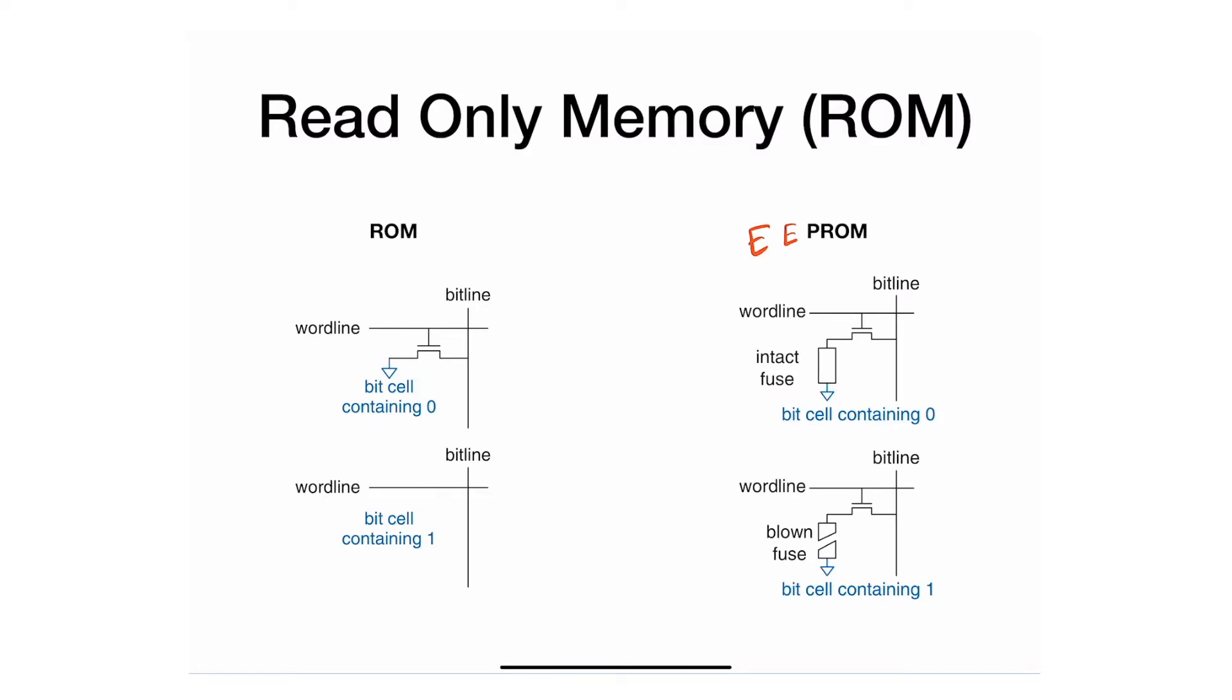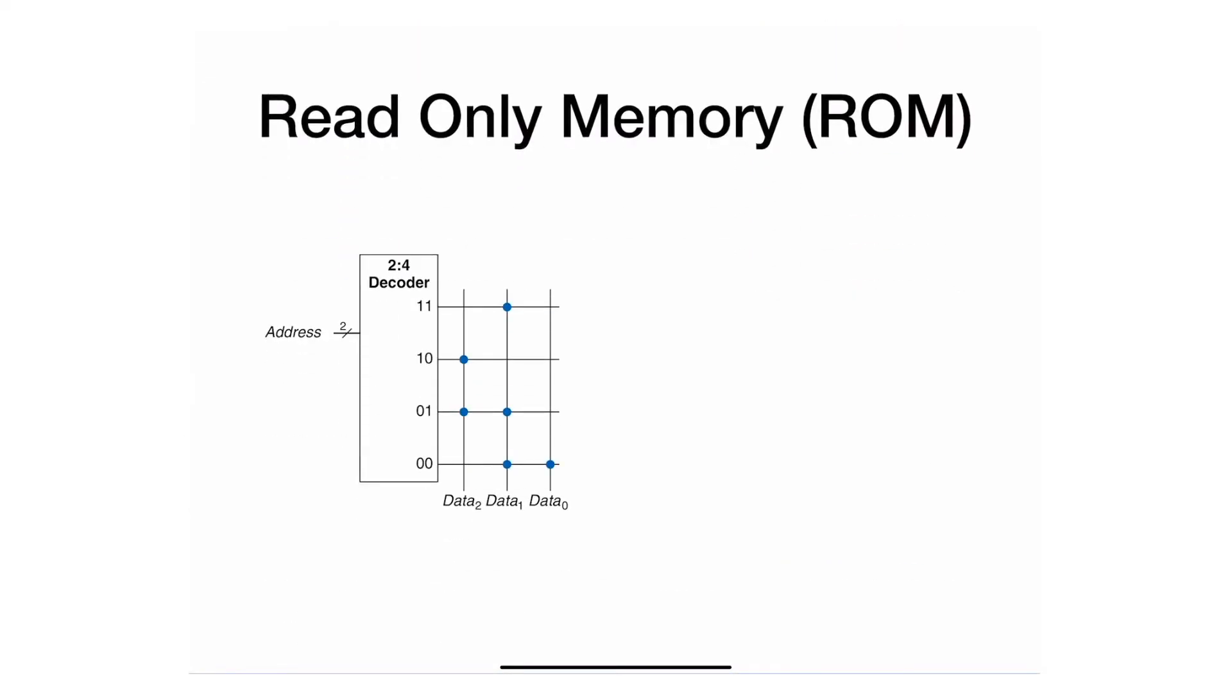Sometimes, instead of putting transistors, ROM is represented in this particular dot notation. In this dot notation, we have an address, and whenever we want a one we put a dot. Whenever we want a zero, we keep it empty—no dot.